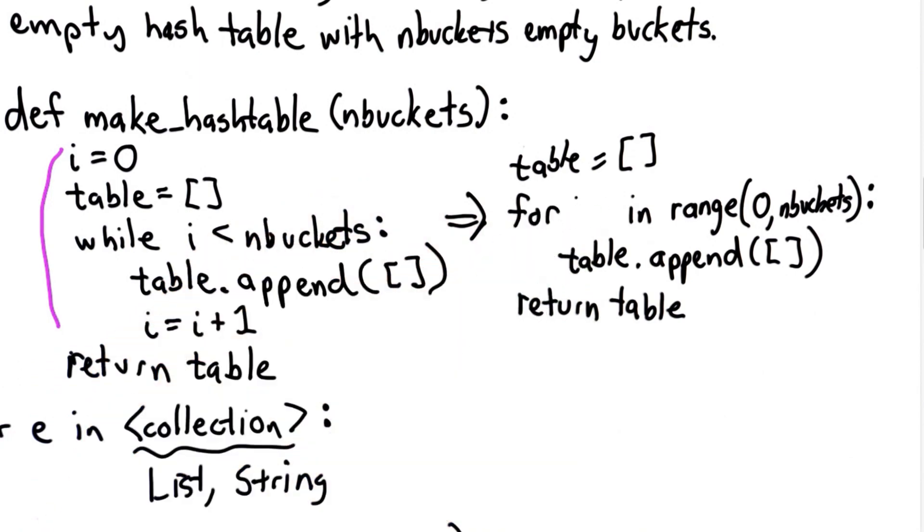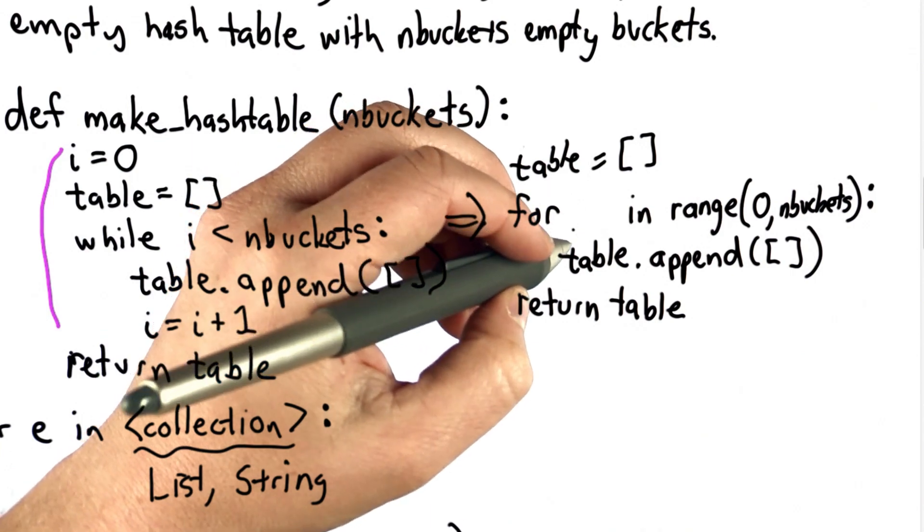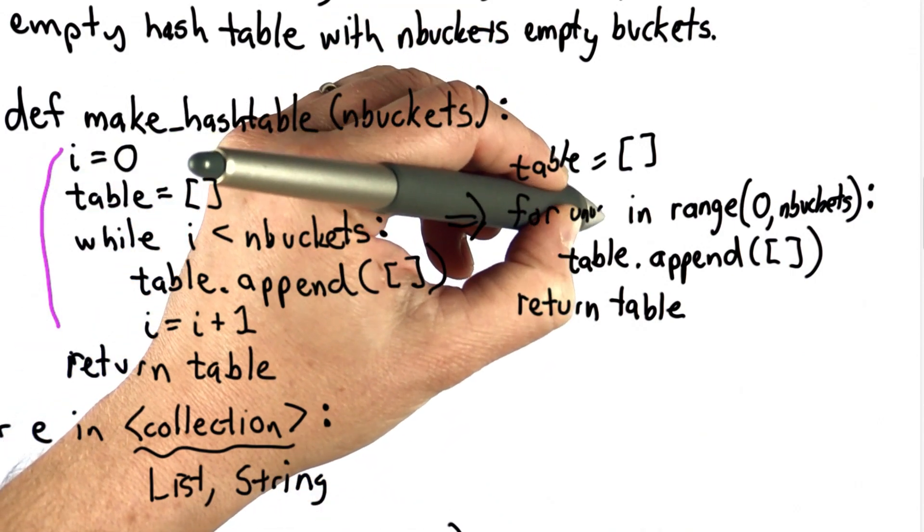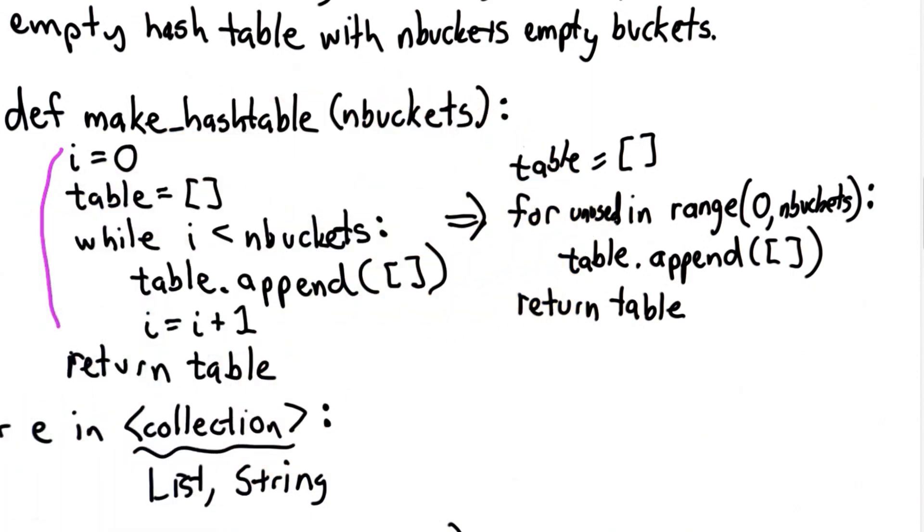For this loop, we didn't actually need a variable here. We never used the variable inside. For the syntax of the for loop, we still need something here. So I'm just going to call the variable unused to make it clear that we have a name there. We don't actually use it in the body of the for loop. So this makes the code a lot smaller.